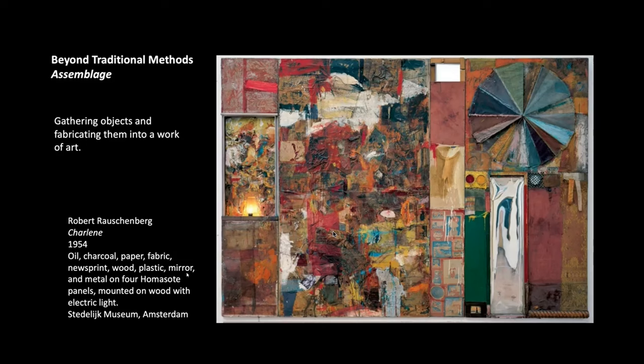I start with assemblage because it really blends the boundary between what is sculpture, what is painting, what is drawing, and what is relief. The basic definition of assemblage is when you gather different types of objects — which could be anything: trash, buttons, parachutes — and fabricate them into a work of art. It's almost like collage. Of course, this is additive — you're adding things to a surface. This is Robert Rauschenberg's Charlene from 1954. Rauschenberg is a pretty well-known American modern artist.